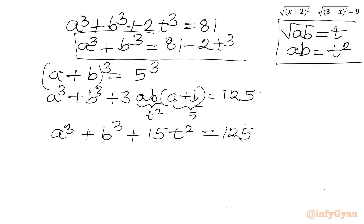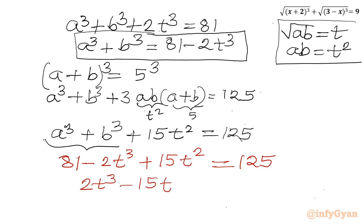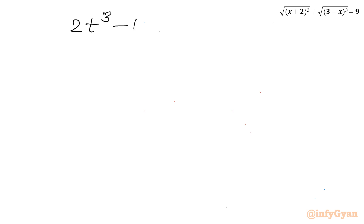Now I'll substitute a³ + b³ = 81 − 2t³ into the equation a³ + b³ + 15t² = 125. This gives: 81 − 2t³ + 15t² = 125. Taking all terms to the right-hand side: 2t³ − 15t² + 44 = 0. This is a cubic equation which I will solve by factorization.